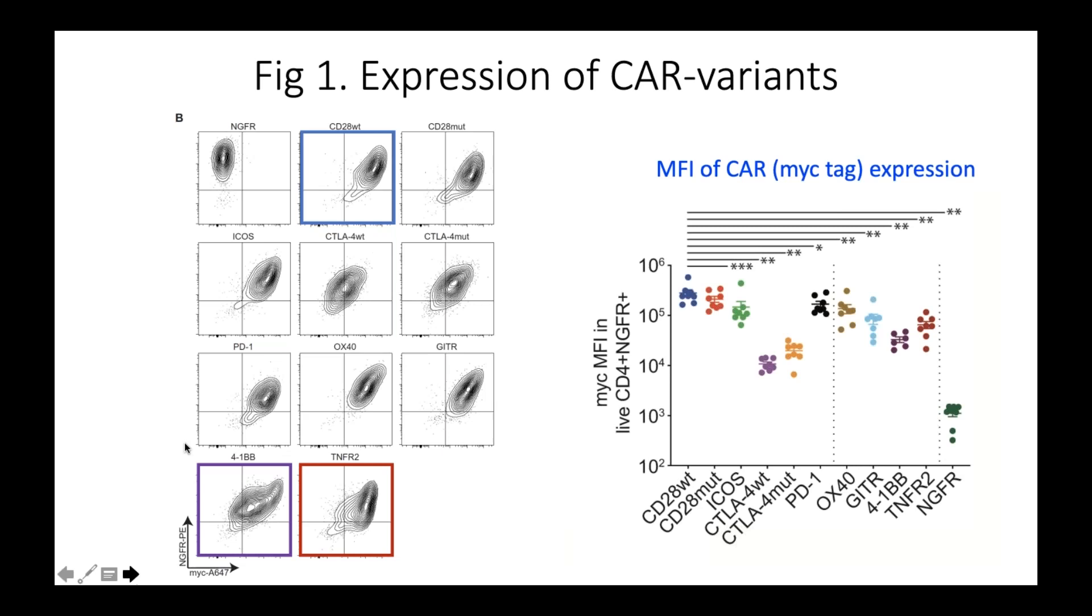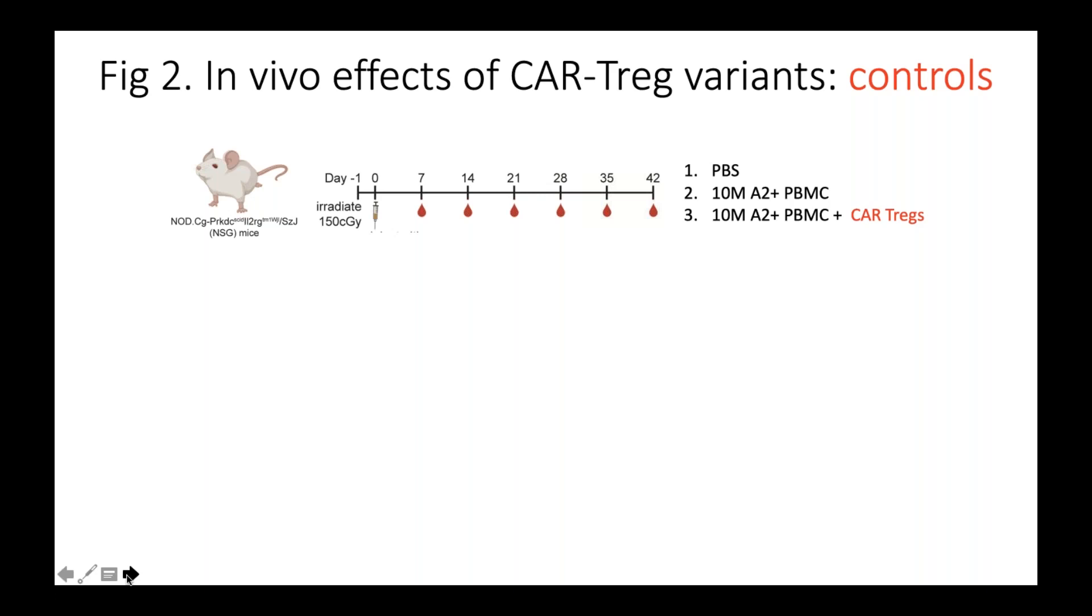So the first thing we saw was that there was quite a bit of variation in how well these different receptors were expressed. You can see beautiful co-expression of the MCTag being the CAR, as well as NGFR, which is the surface marker. But they basically were all expressed on the cell surface, so we felt confident to be able to go on and test all of these receptors.